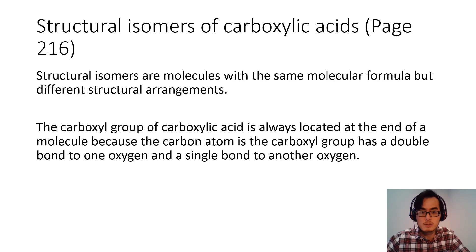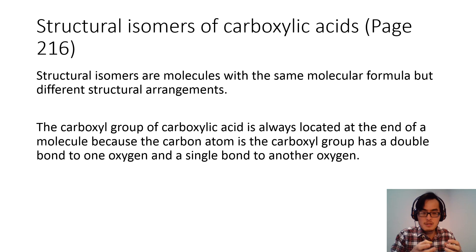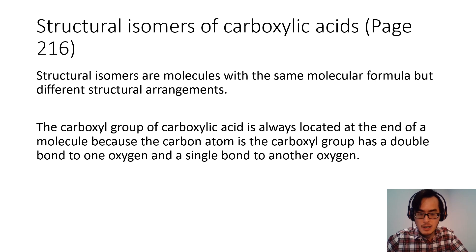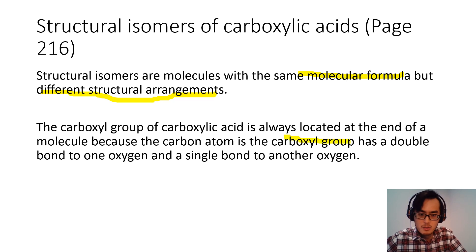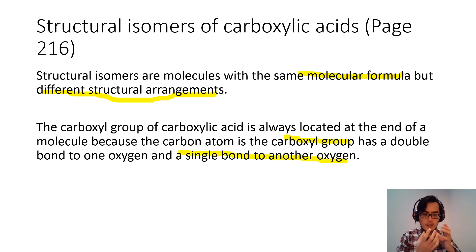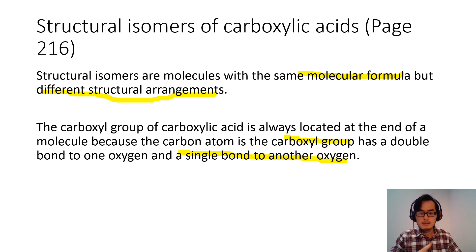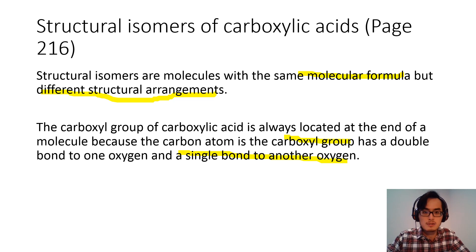This slide talks about structural isomers. Structural isomers are molecules that have the same molecular formula but different structural arrangement. The carboxyl group of carboxylic acid is always located at the end of the molecule, because the carbon atom in the carboxyl group has a double bond to one oxygen and a single bond to another oxygen.